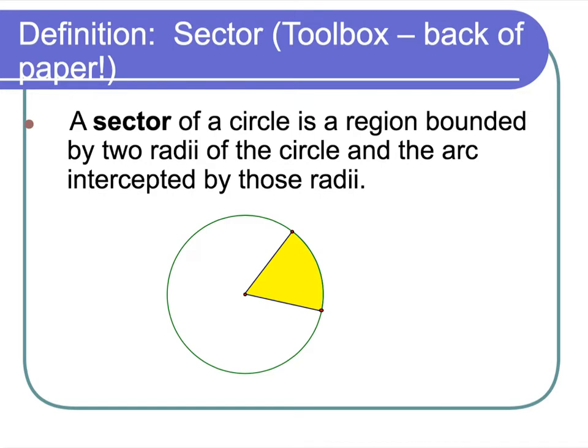A sector of a circle is just a region of the circle that's been shaded, a portion of that circle. Think of it as a slice of pizza out of the pizza pie. We've probably talked about this when we did arc length and arc measure, but basically this is a portion of the area, whereas arc length was a portion of the circumference.